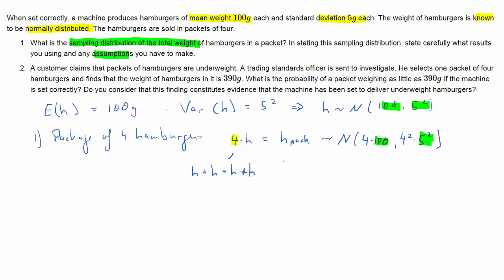H_pack is normally distributed with expected value 400, and actually variance is 400 as well. That's of course pure coincidence. We should note at this stage that the way how we calculated the variance for H_pack assumed that the four draws of hamburgers out of the big distribution were independent of each other.